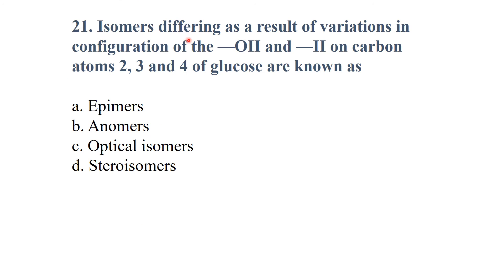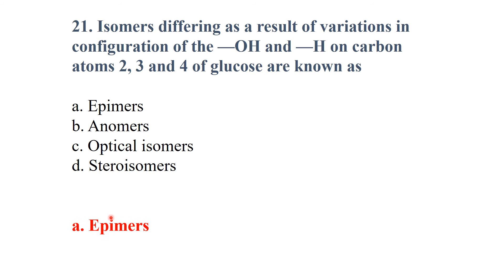Isomers differing as a result of variations in configuration of the hydroxyl and hydrogen at carbons one, two, three, and four of glucose are known as epimers. Optical isomers are stereoisomers, so the answer is epimers.